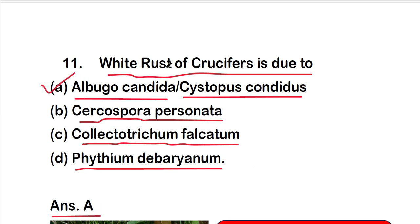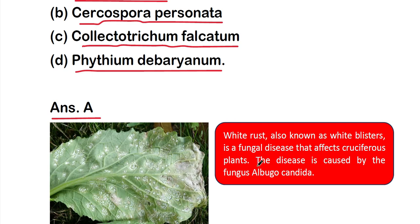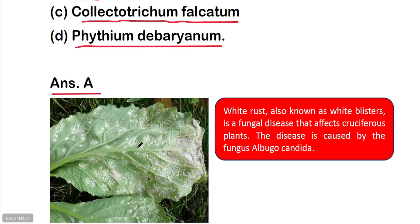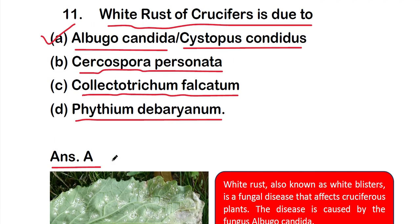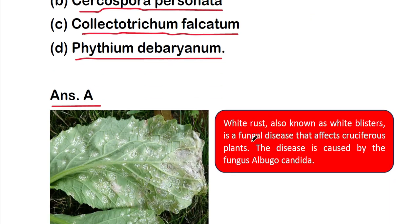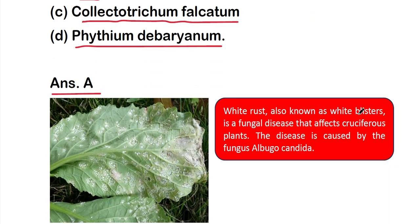White rust of crucifers is due to Albugo candida, or Cystopus candidus. White spots can be seen on the crucifers. White rust, also known as white blisters, is a fungal disease that affects cruciferous plants and is caused by the fungus Albugo candida.